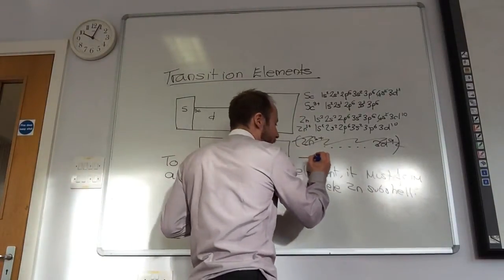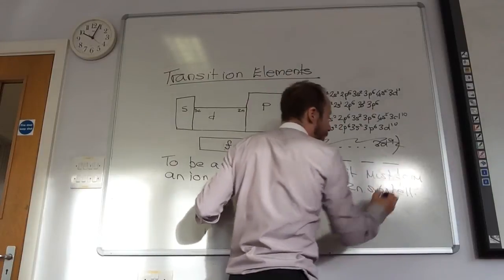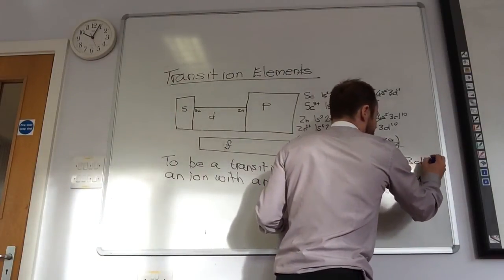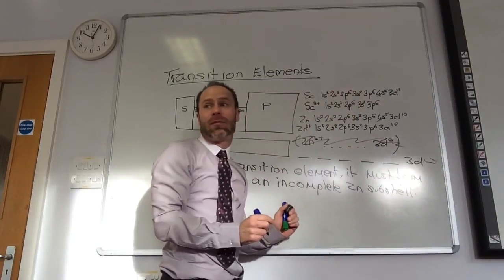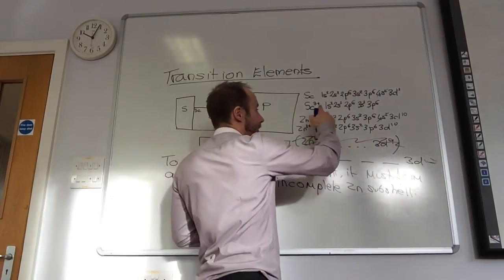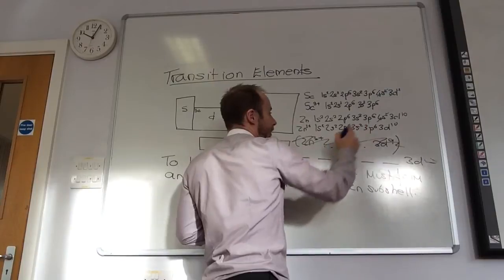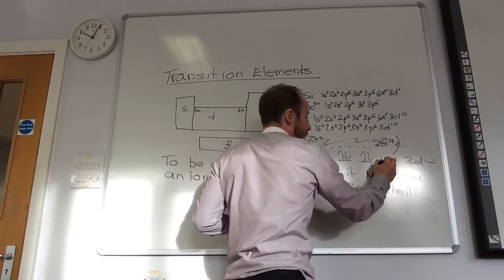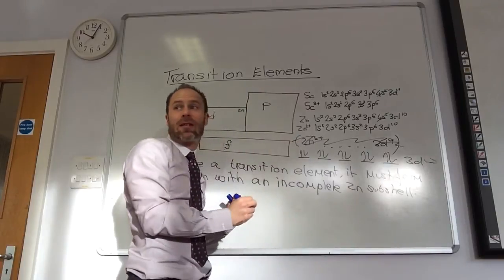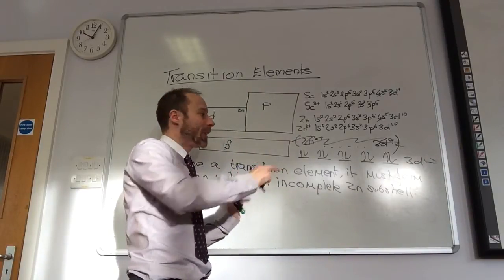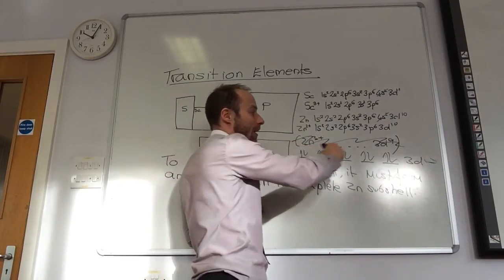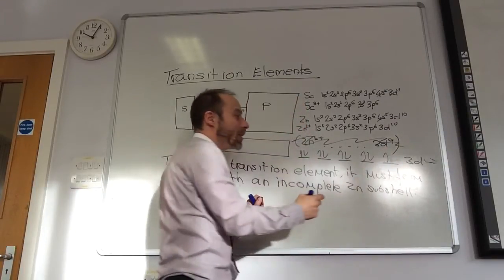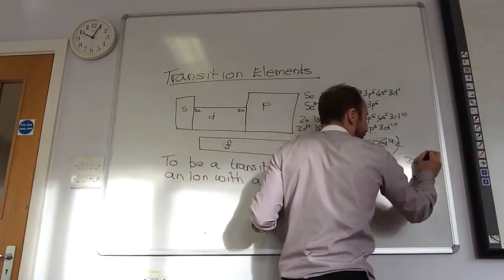So, I've got five orbitals in my 3d subshell. Zinc has got them all full of electrons, as has Zinc 2+. If I did form Zinc 3+, I'd remove an electron. So, he could now—Zinc is now going to be 3d9.